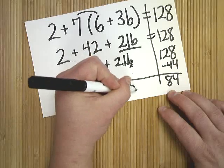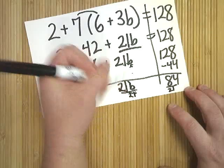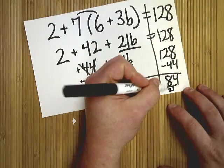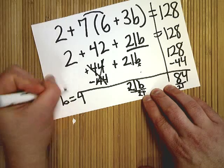So I'm at the last step where I Finish Him. I'm going to divide by 21 because 21 divided by 21 is 1, and 84 divided by 21 is 4. So b equals 4.